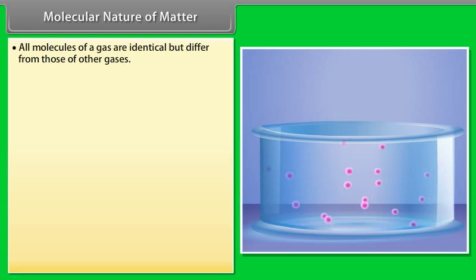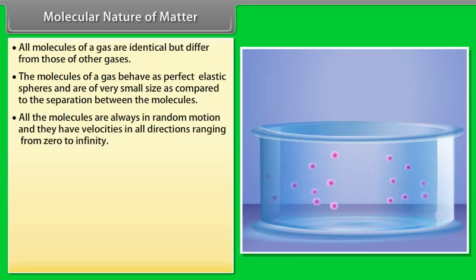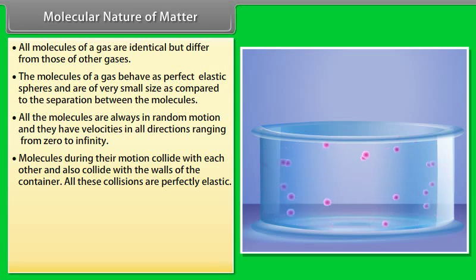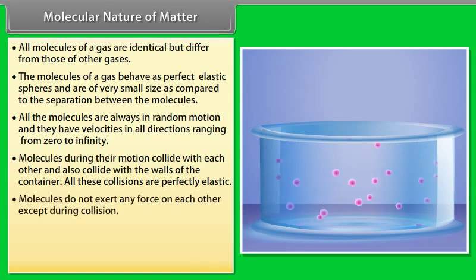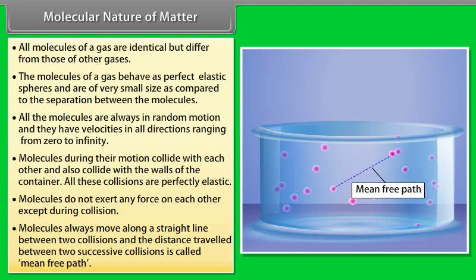All molecules of a gas are identical but differ from those of other gases. The molecules of a gas behave as perfect elastic spheres and are of very small size as compared to the separation between the molecules. All the molecules are always in random motion and they have velocities in all directions ranging from zero to infinity. Molecules during their motion collide with each other and also collide with walls of the container. All these collisions are perfectly elastic. Molecules do not exert any force on each other except during collision. Molecules always move along a straight line between two collisions, and the distance travelled between two successive collisions is called mean free path.